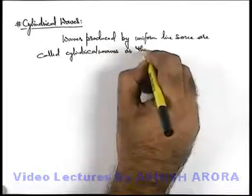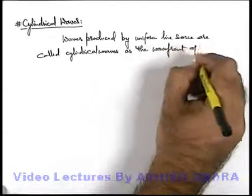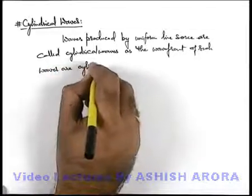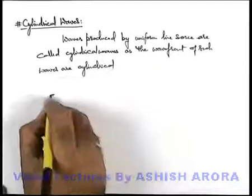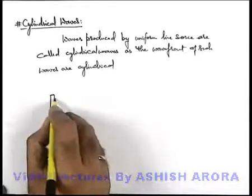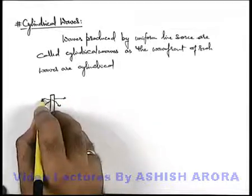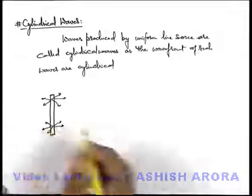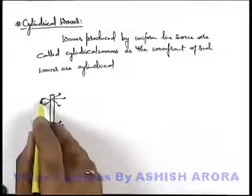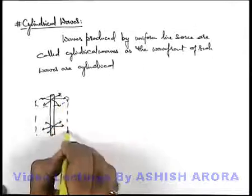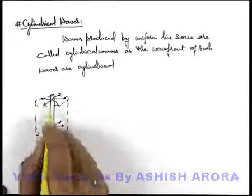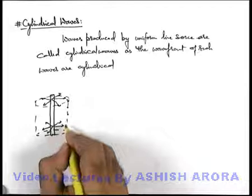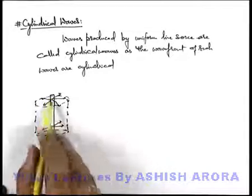The wavefront of such waves are cylindrical. If we talk about a line source, a uniform line source produces waves uniformly in the radially outward direction from the line. So when the waves are propagating away from the line source on a cylindrical surface with its axis located at the source, all points will be in the same phase because they are all located at equal distance from the line source.